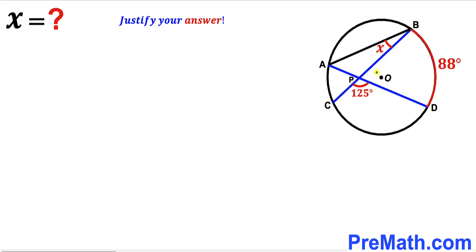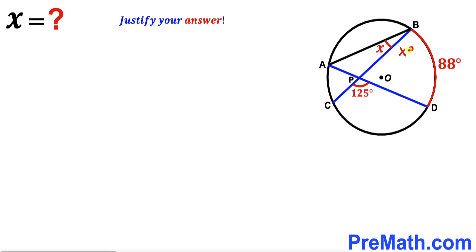These two chords intersect each other at point P. The arc BD measurement is 88 degrees, the angle CPD is 125 degrees, and the angle ABC is represented by x. Our task is to find the value of angle x.